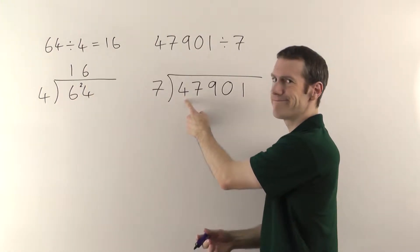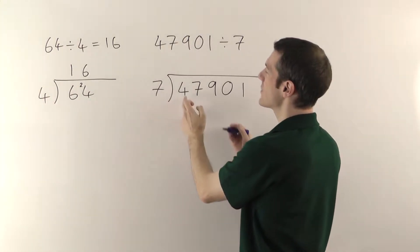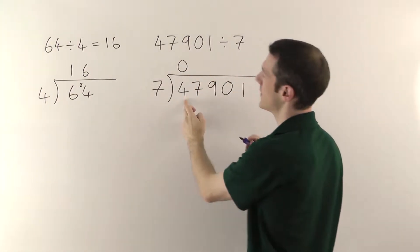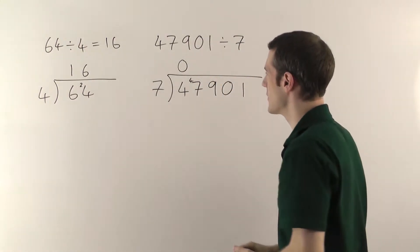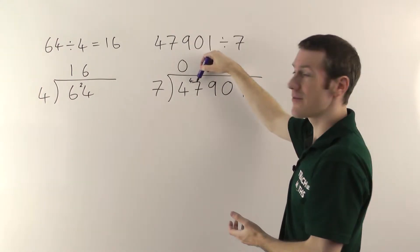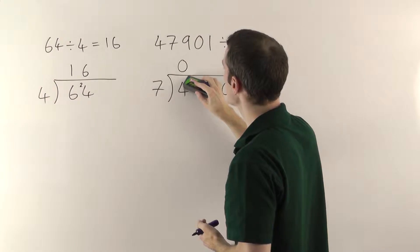So then, 7s into 4. Hmm, well 7s won't fit into 4. 7 is too big. So you could say 7s go into 4 zero times. The remainder then would be 4, because you haven't used up any of the 4 you're trying to divide into. And you can write that there to turn the 7 into a 47. Personally, I don't tend to bother.